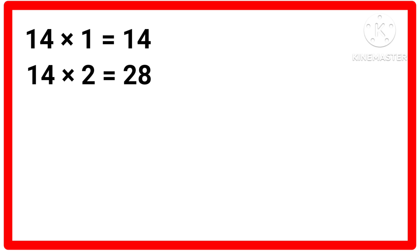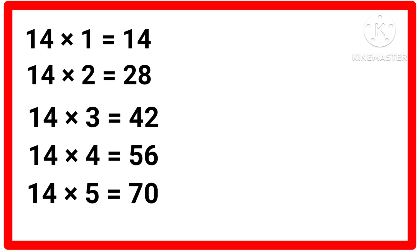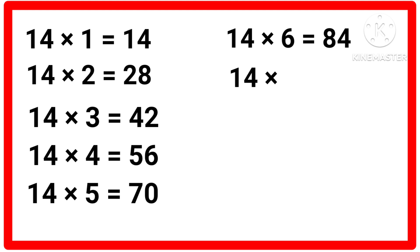Table of 14. Fourteen ones are 14, fourteen twos are 28, fourteen threes are 42, fourteen fours are 56, fourteen fives are 70, 14 sixes are 84, 14 sevens are 98.